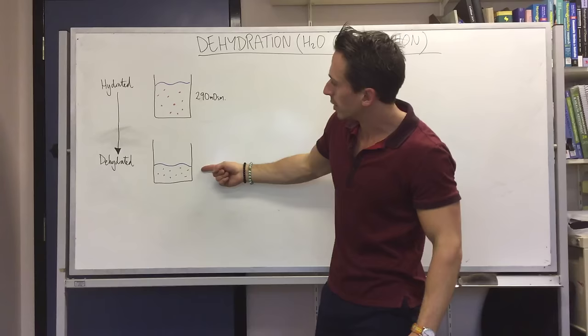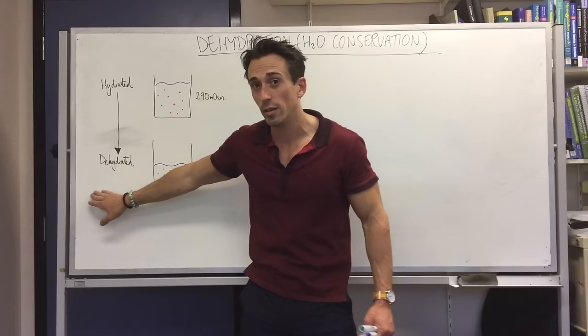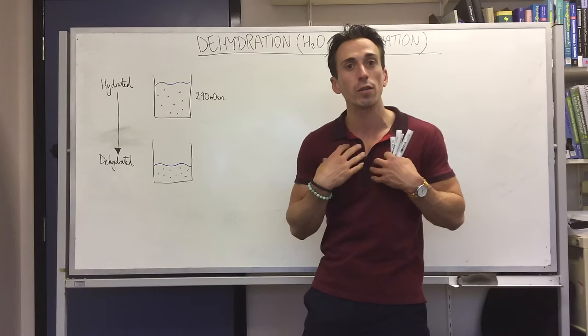So going from a hydrated state where we have, just as an example, 10 solutes dissolved in one liter, we move down to where we've become dehydrated. Well what's happened is that the volume of the fluid is diminished, yet we still have those 10 solutes. So what happens then? Well this fluid becomes more concentrated, and that's what happens to our body fluids. It becomes more concentrated, which means that...